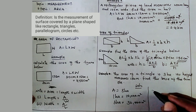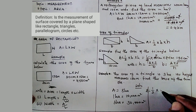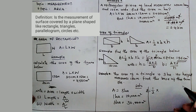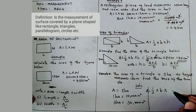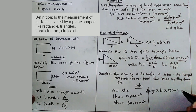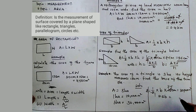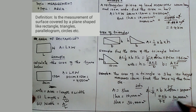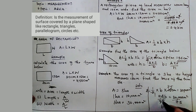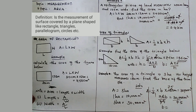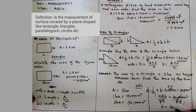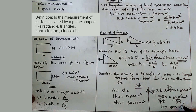Now we solve using the formula: area equals one half times base times height. So one half times base times 150 meters equals 30,000 meter square. One half times 150 gives 75, so 75 times B equals 30,000 meter square. To find B (the base), divide both sides by 75: base equals 30,000 divided by 75, which gives 400 meters. The base is 400 meters.